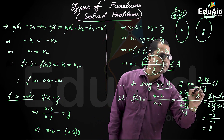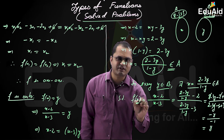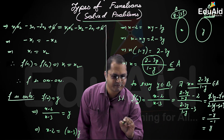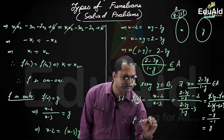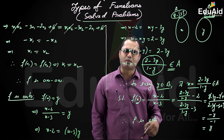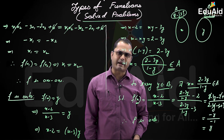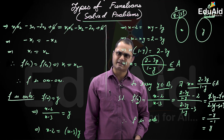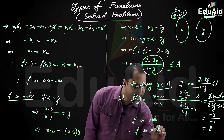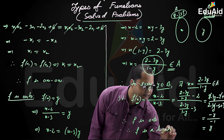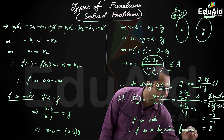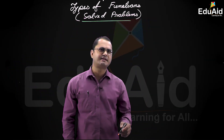Therefore, for every y in B, we found an x such that x's image under the function f, f(x), is equal to y. Therefore f is onto. Since f is both one-one and onto, f is a bijective function — hence proved. Let us consider the next question.